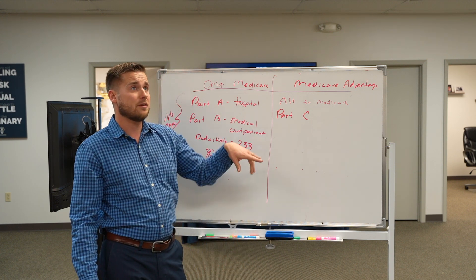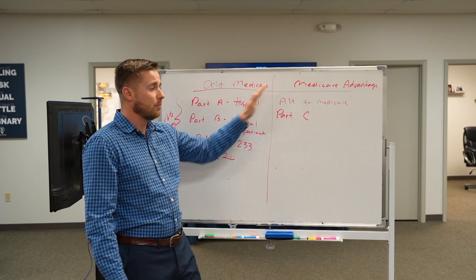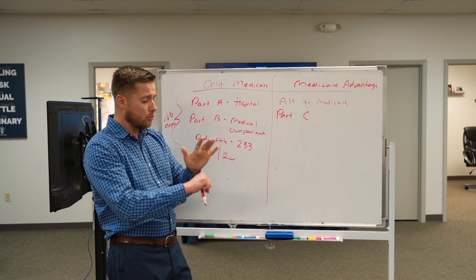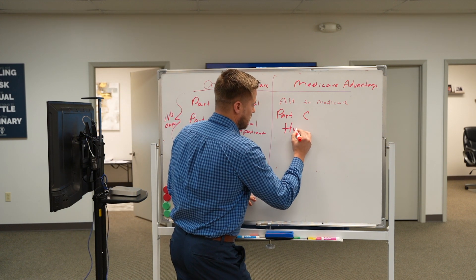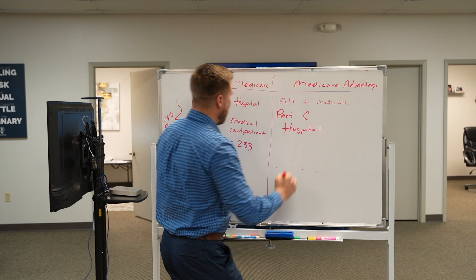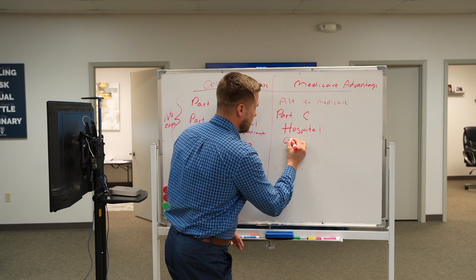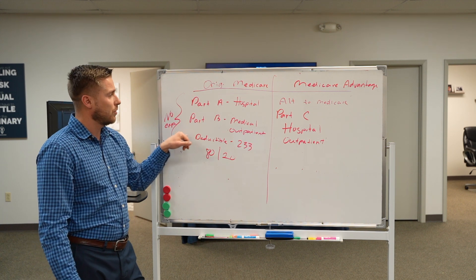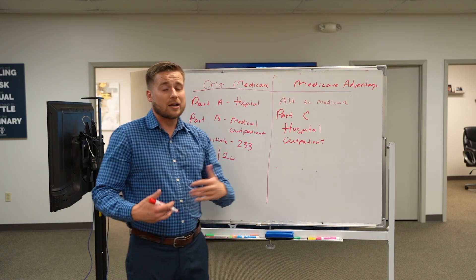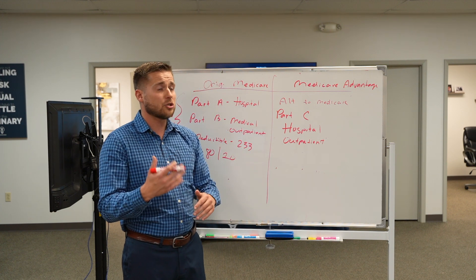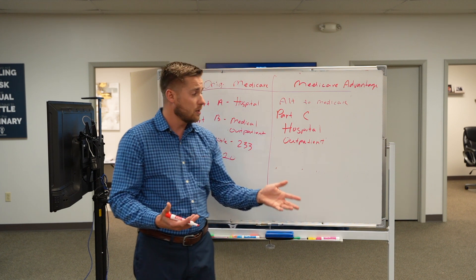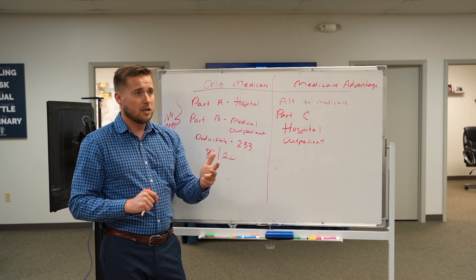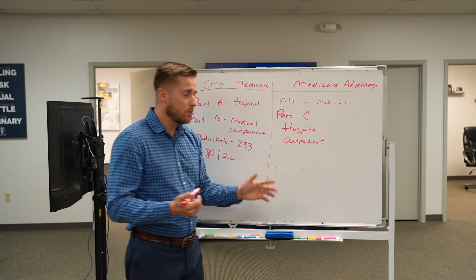Medicare Advantage is an alternative to Medicare. This is actually on page five of the Medicare and You guide for 2022. Medicare Advantage, or Part C, includes hospital benefits and outpatient medical benefits. But unlike original Medicare where there is no cap, with Medicare Advantage you actually get to pick the cap — you get to pick how much money you can afford out of pocket yearly in the forms of co-pays, co-insurance, and max out-of-pockets, also known as MOOP.